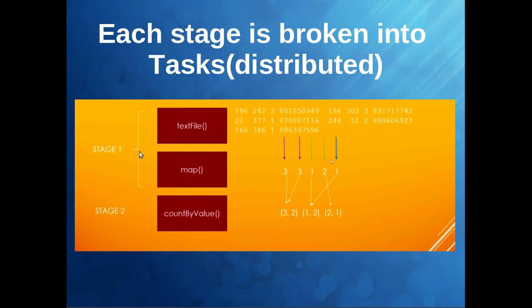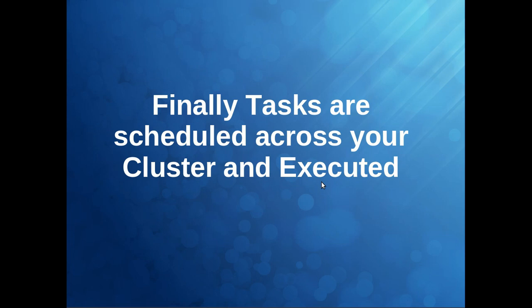Each stage is further divided into a number of tasks. For example, the mapping is happening in parallel — two tasks may perform in one node, and other mapping tasks perform on different nodes of the cluster. That is how, inside each stage, a number of tasks are created and distributed among the cluster nodes. Finally, tasks are scheduled across the cluster and executed. The cluster manager plays a very important role — it collects all the results, knows where the data sits in which nodes, finalizes the result, and gives it back to the driver program.